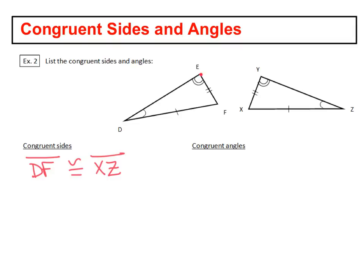But this EF is going to match up with the side in the other triangle. So segment EF is congruent to segment XY. And there's our congruent segments.